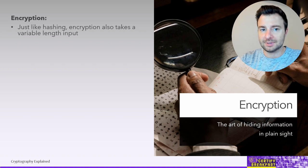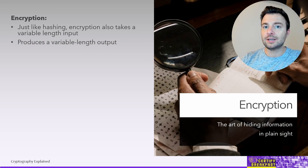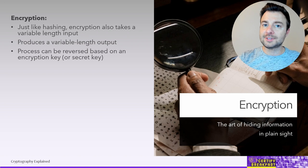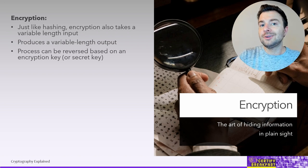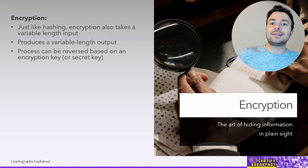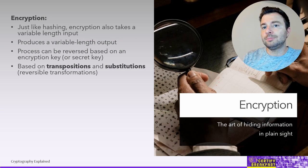Next on the list are encryption algorithms. Encryption as a mathematical operation receives any kind of input and produces a variable-length output — because encryption is reversible. We can reverse the encryption process if we have the corresponding key used for encryption. We need a key for encryption because otherwise there's no protection; encryption algorithms are well-known, so without a key anyone could reverse the algorithm to access the data.